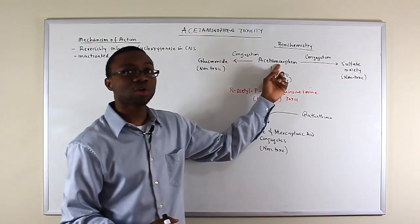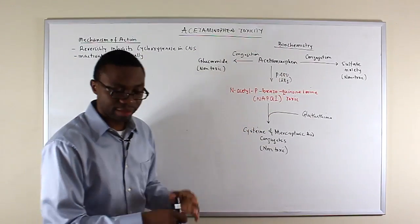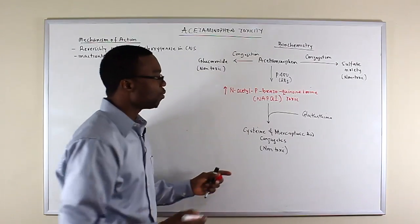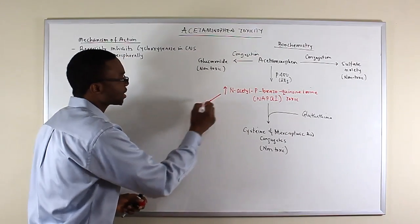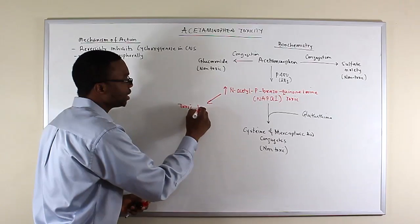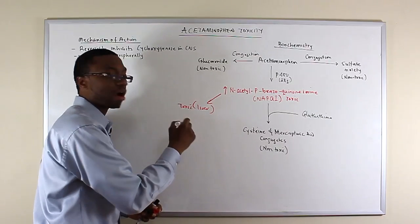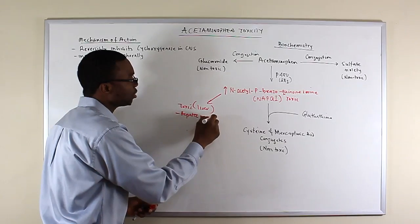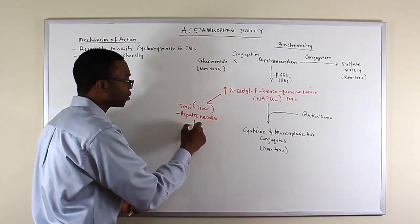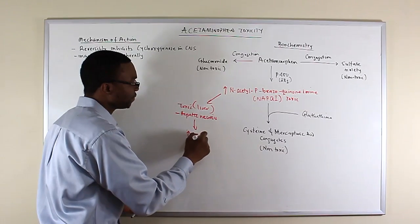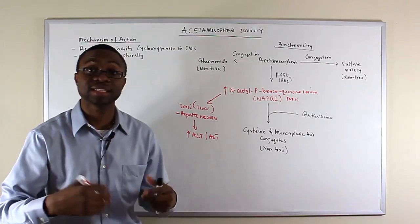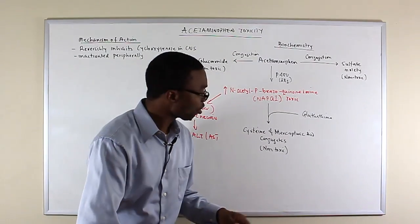When patients take an overdose of acetaminophen, they form an excess amount of NAPQI, which is now toxic to the liver. Remember, this causes hepatic necrosis. This hepatic necrosis will lead to elevated liver function tests, which is the AST and ALT, because the liver cells are dying.